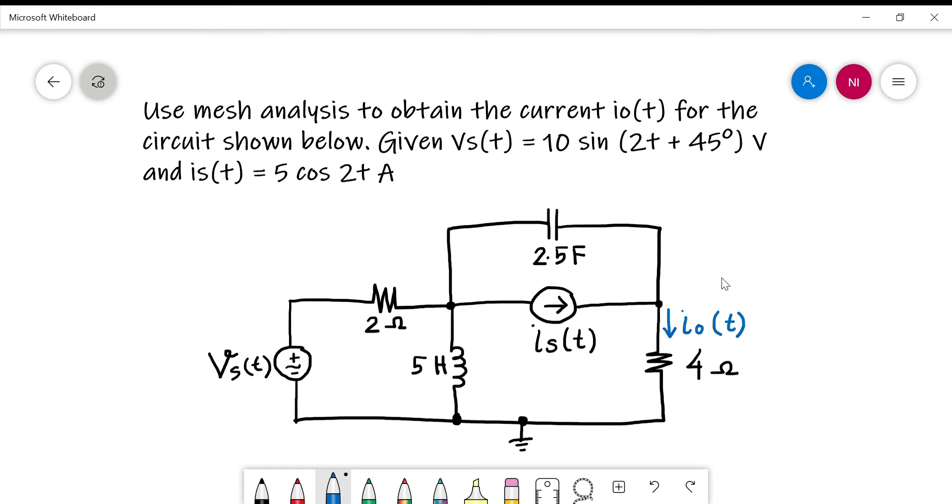How to recognize if this circuit is time or frequency domain? If you see here, the unit of capacitor and inductor are farad and henry respectively. Also, the values given for VST and IST are in sinusoid. This means that this circuit is in time domain.